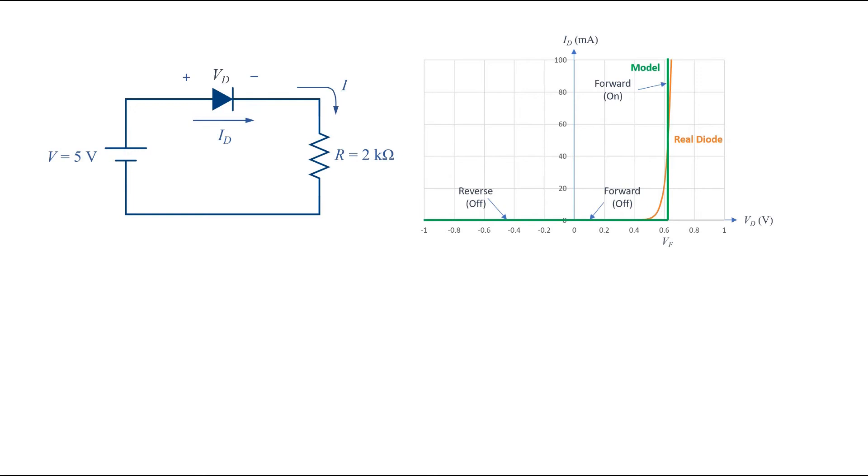We can replace the diode with its equivalent circuit in forward bias, which is a battery with voltage Vf.